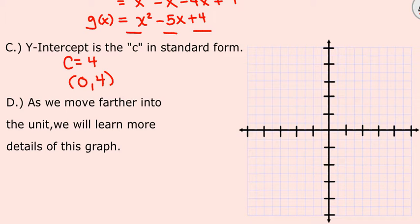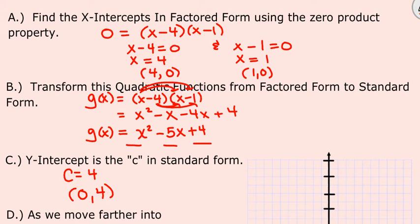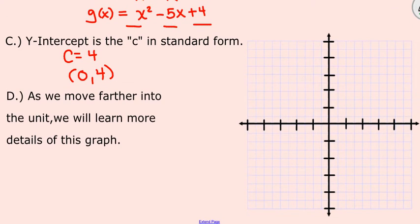So what we're going to do is we're going to just graph the intercepts for this function. We're going to graph the x-intercept of 4, 0, and 1, 0. So let's create some values on a coordinate plane. So 1, 2, 3, 4.